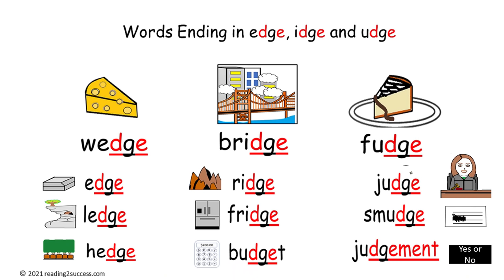Now we come to our last category of letters that make the soft G sound. We have E-D-G-E, I-D-G-E, and U-D-G-E. For E-D-G-E: wedge, edge, ledge, and hedge. For I-D-G-E: bridge, ridge, fridge, and budget — which happens to be in the medial position. Then for U-D-G-E: fudge, judge, smudge, and judgment — a compound word with U-D-G-E in the medial position.